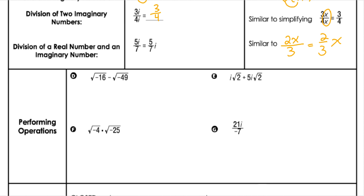To start with here, we have the square root of negative 16. The square root of 16 is 4, and the negative makes it imaginary. Then we're going to subtract. The square root of 49 is 7, and the negative makes it imaginary. Now I have like terms — two imaginaries — so I would subtract to get negative 3i.